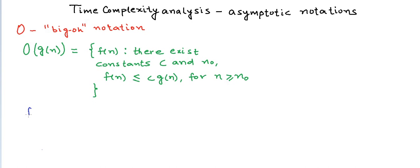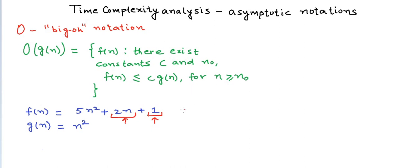Let's say we have f(n) = 5n² + 2n + 1 and g(n) = n². Now, 2n can never be greater than 2n², and 1 can never be greater than n². So if we use c = 5 + 2 + 1 = 8, then f(n) is always less than or equal to 8n² for all n ≥ 1.